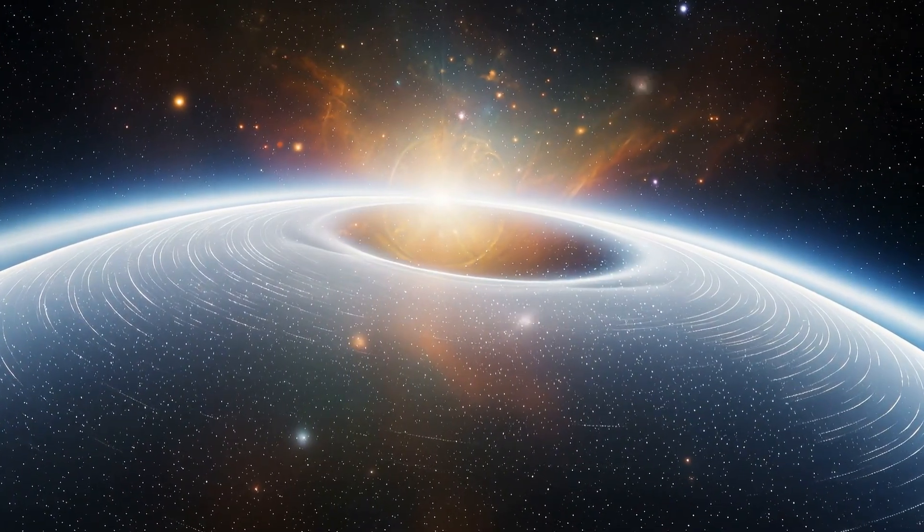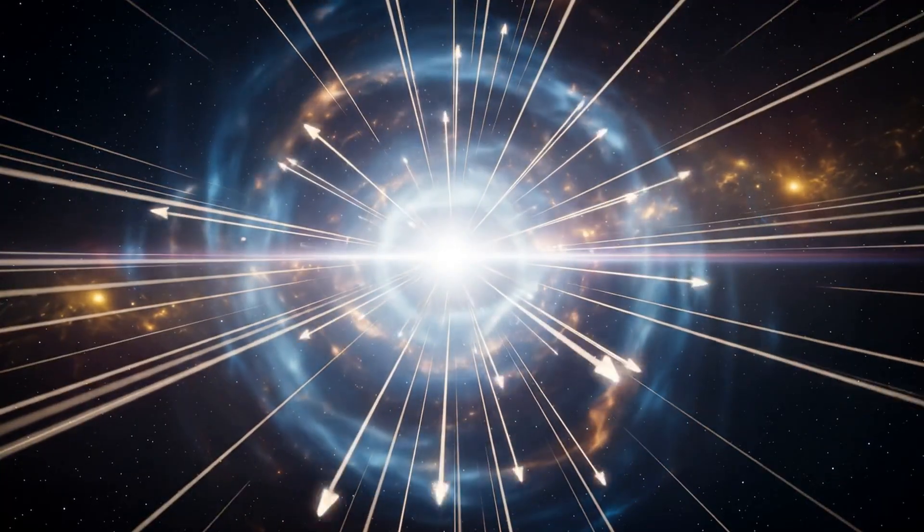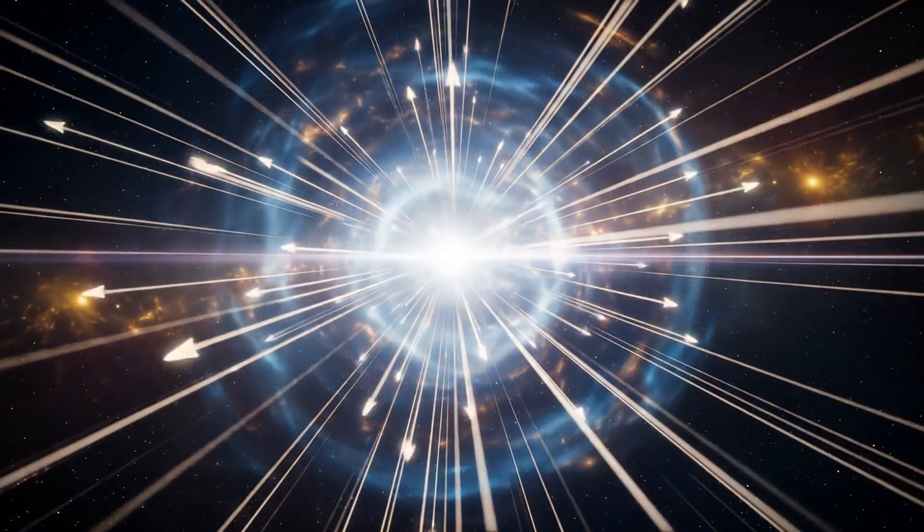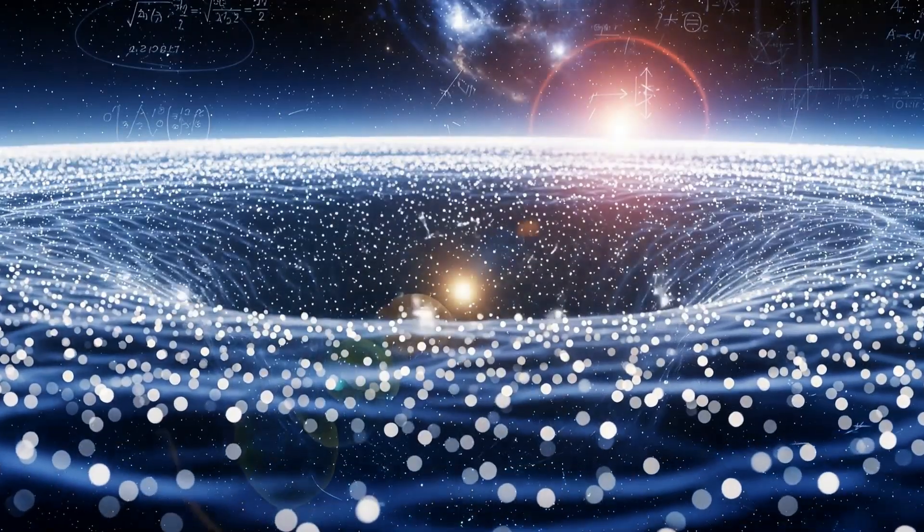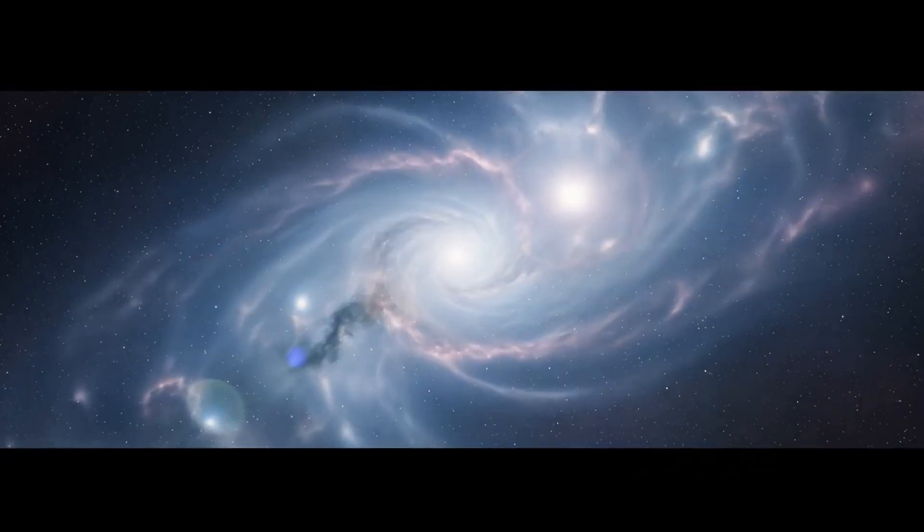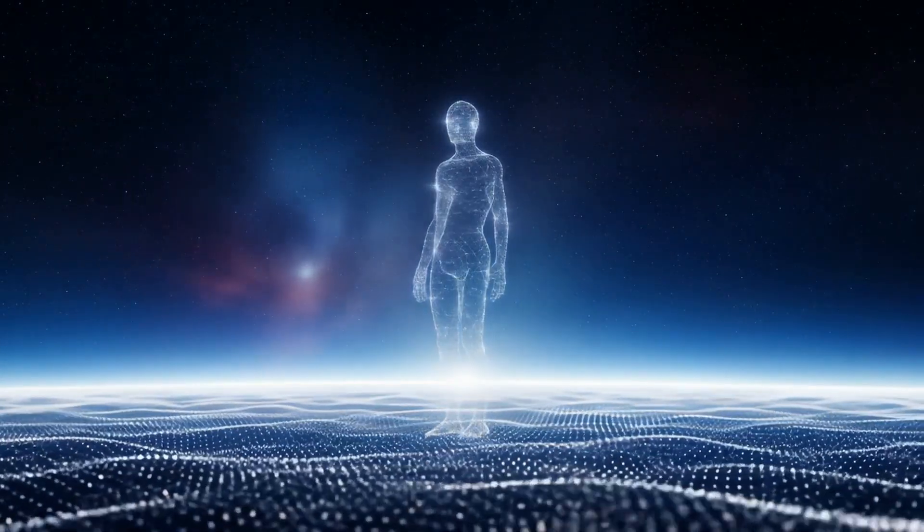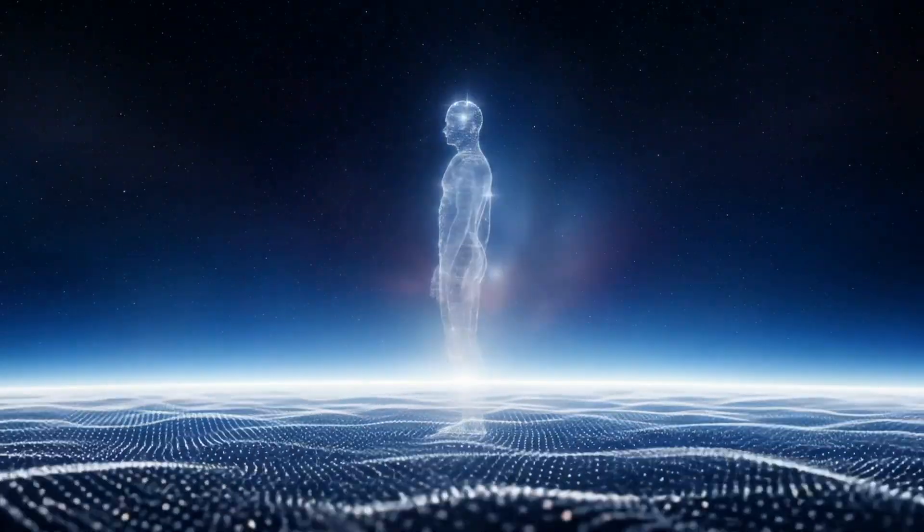Every photon that emerges from the singularity is a spinning quantum state vector, a slope of light encoded on a qubit of the event horizon. The horizon is not separate from you, it is the world you live in, the visible field of projected states that you call reality.